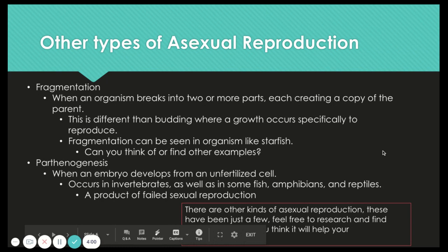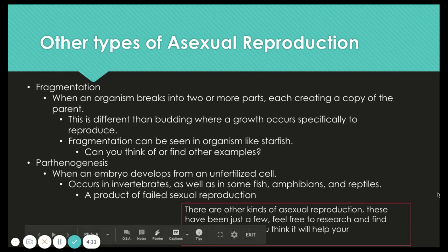Then parthenogenesis. This is when an embryo occurs from an unfertilized cell. This usually occurs in invertebrates, as well as some fish, amphibians, and reptiles. It occurs when sexual reproduction would be the goal, but sexual reproduction has failed, either due to lack of a partner or another situation. That embryo then simply grows into an exact copy of the parent. These are just a couple of kinds of asexual reproduction — there are others, so feel free to research and find other examples.